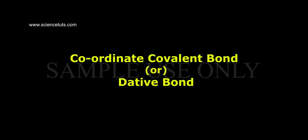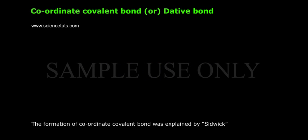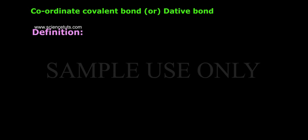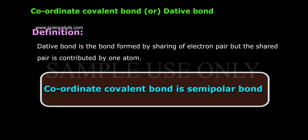A special type of covalent bond is the coordinate covalent bond, also called a dative bond. The formation of coordinate covalent bonds was explained by Sidgwick. Definition: A dative bond is a bond formed by sharing of an electron pair, but the shared pair is contributed by one atom.